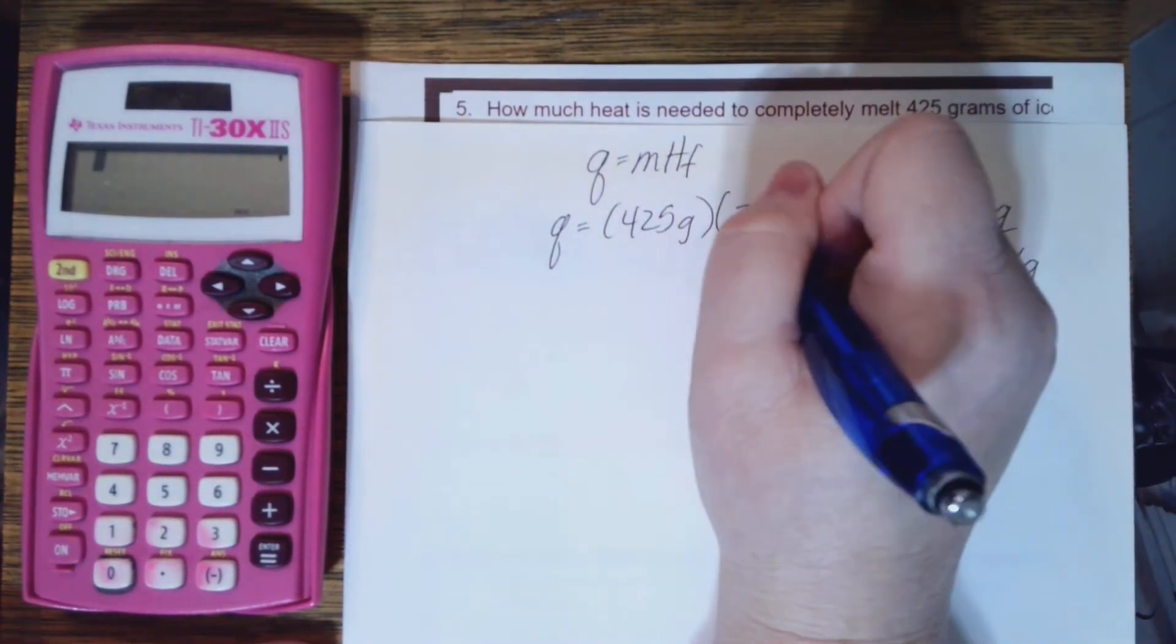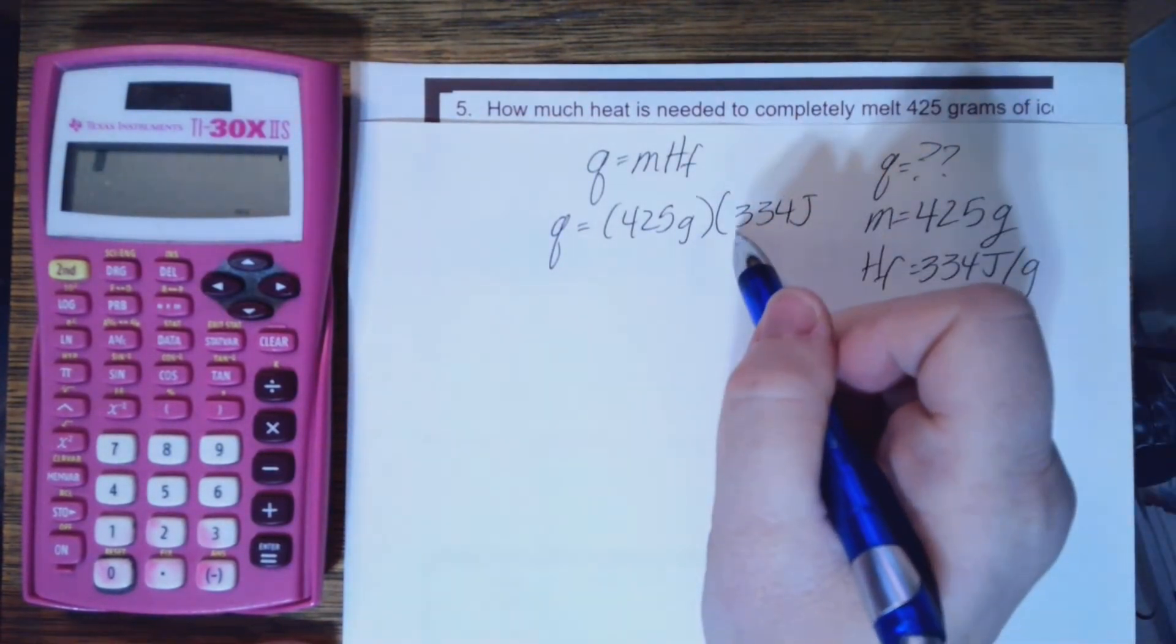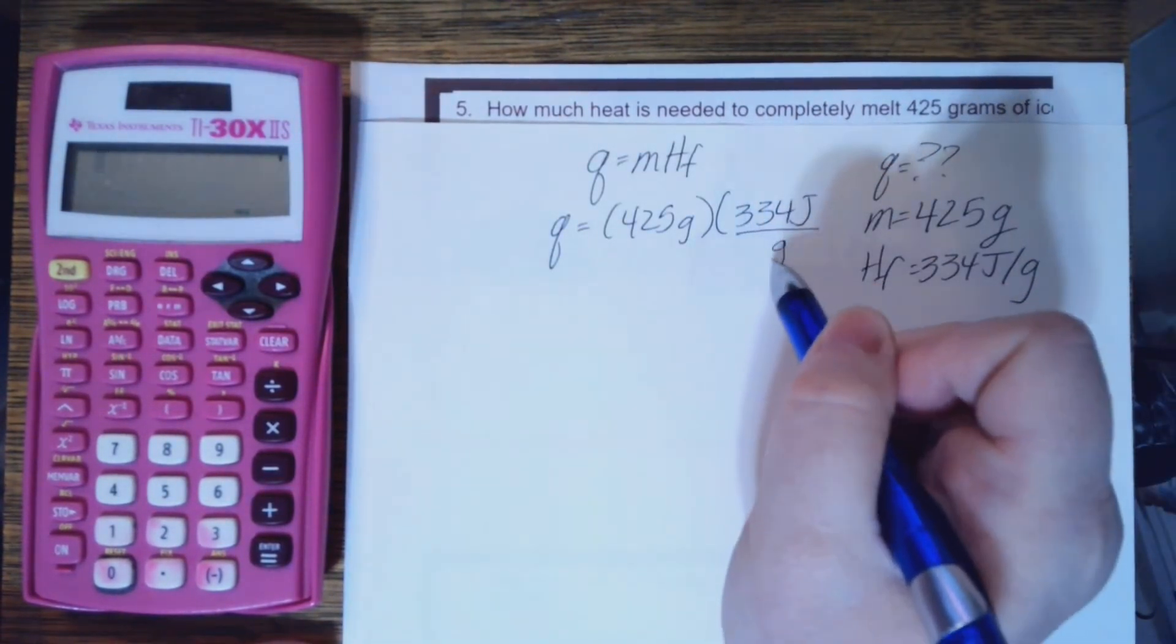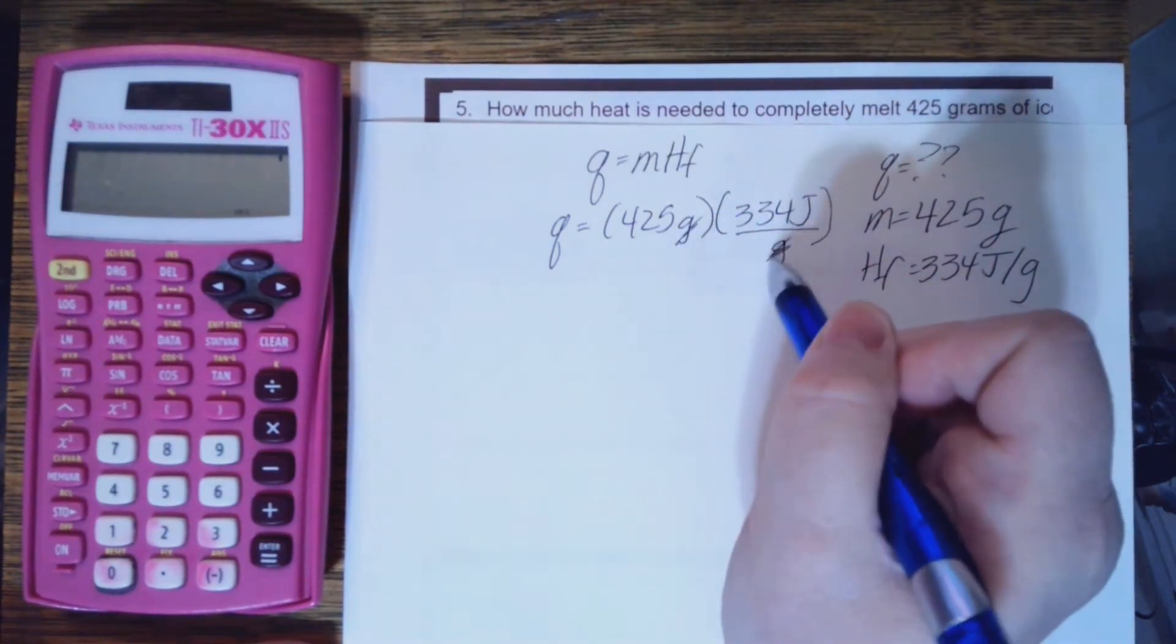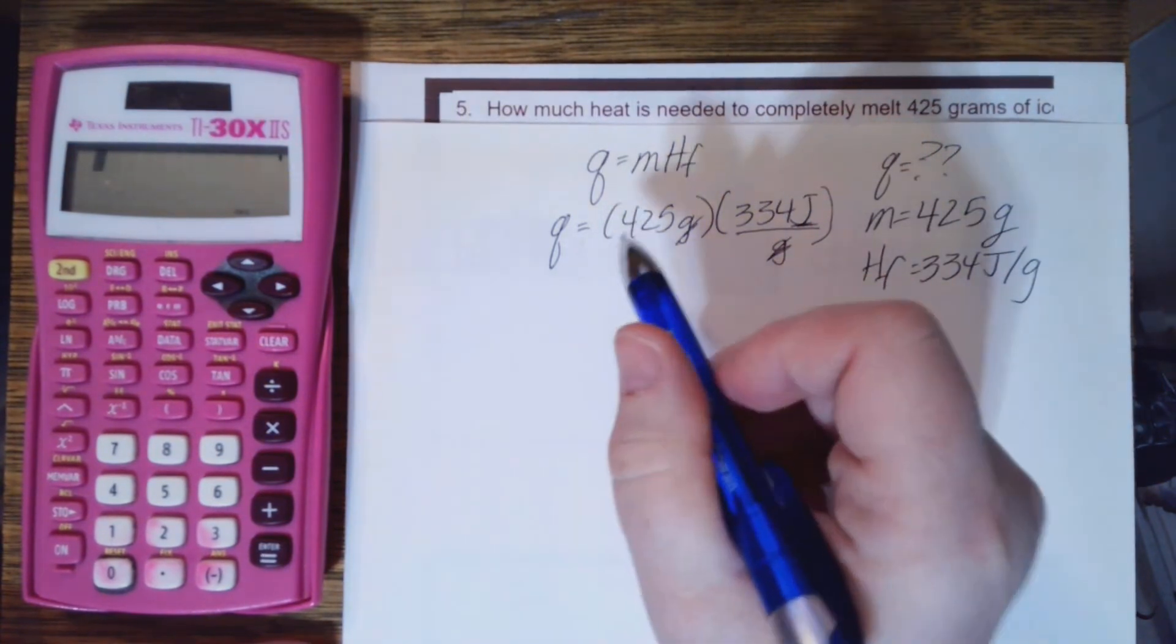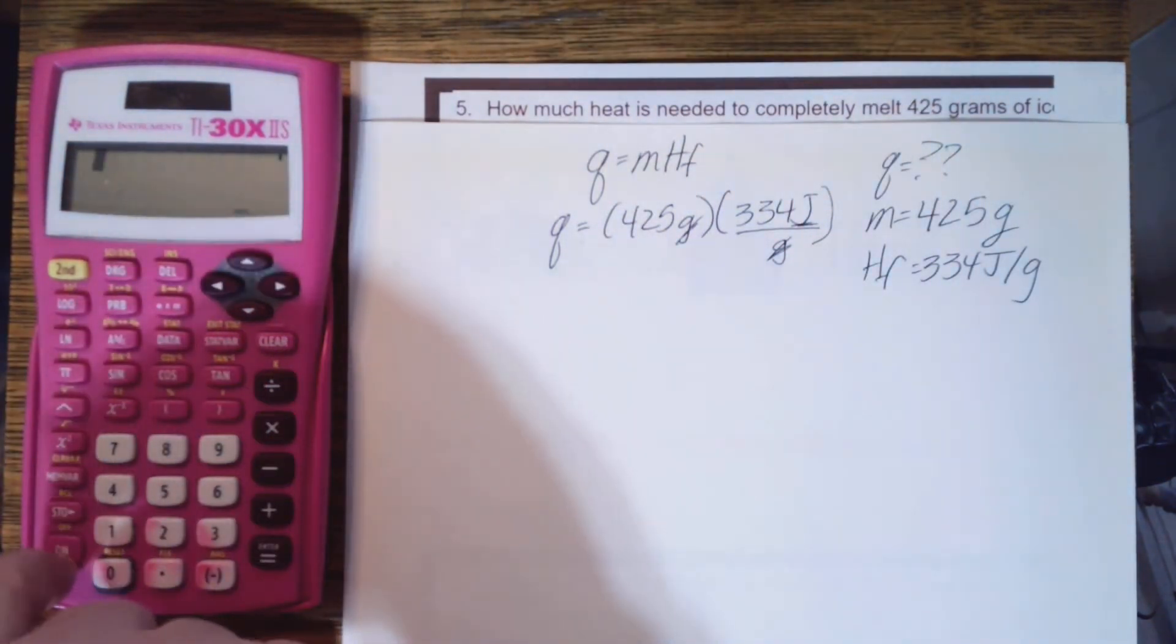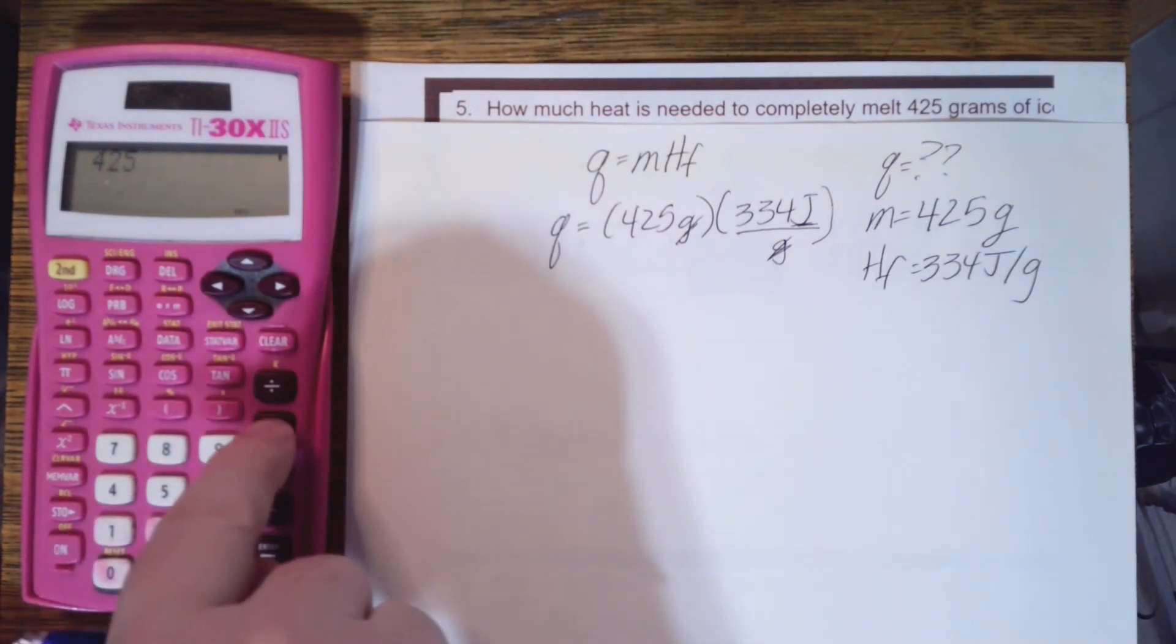Q equals 425 grams times 334 joules. Remember when it's per, that means it's on the bottom like that. So I can cross out grams, so I can cross out grams, leaves me with joules.